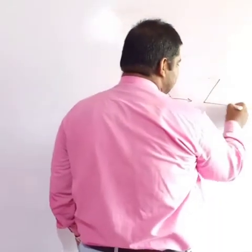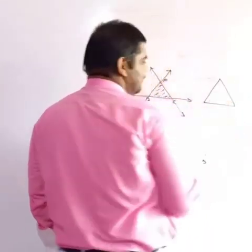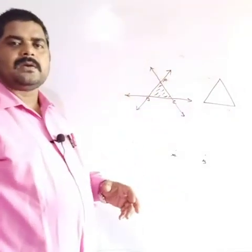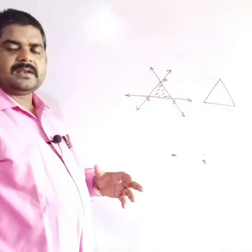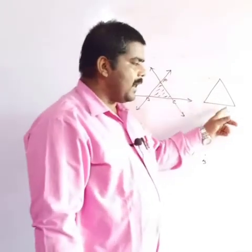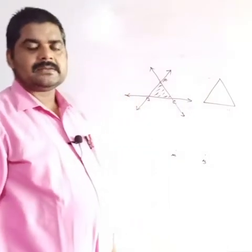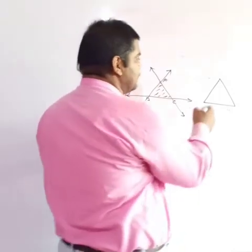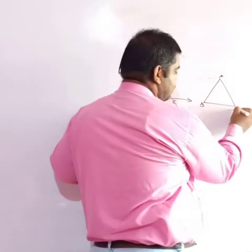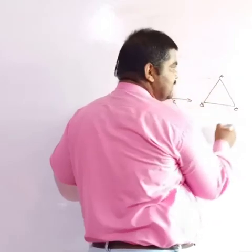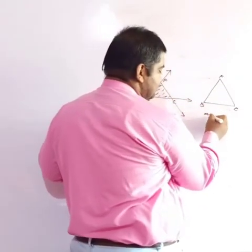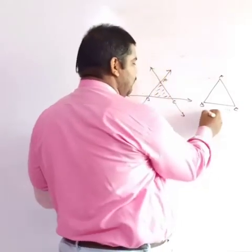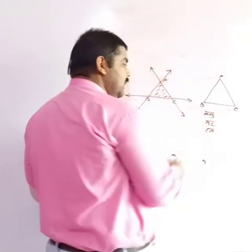A triangle can also be defined another way: it is a simple closed figure which is bounded by three line segments. Those three line segments are AB, BC, and CA, and these three line segments are the sides of the triangle.